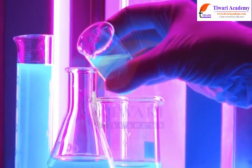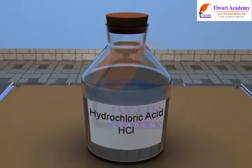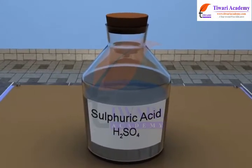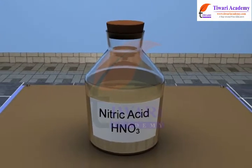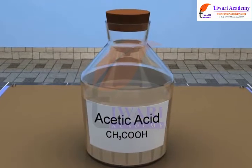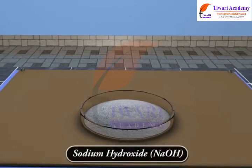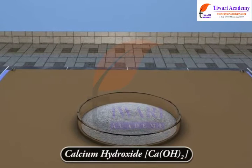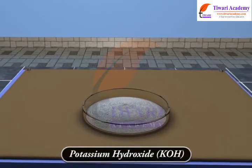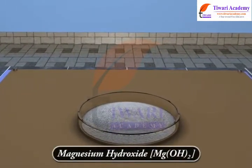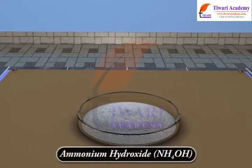Select the following samples from the Science Laboratory: Hydrochloric acid HCl, Sulphuric acid H2SO4, Nitric acid HNO3, Acetic acid CH3COOH, Sodium Hydroxide NaOH, Calcium Hydroxide Ca(OH)2, Potassium Hydroxide KOH, Magnesium Hydroxide Mg(OH)2, and Ammonium Hydroxide NH4OH.